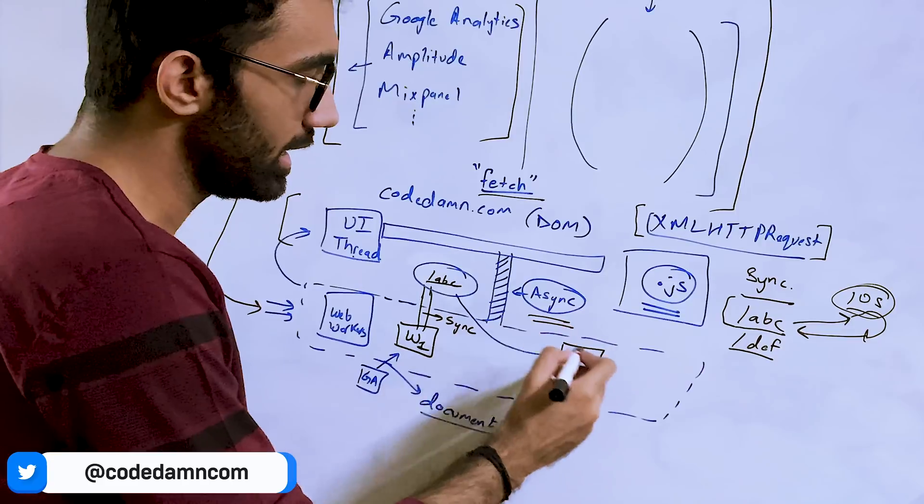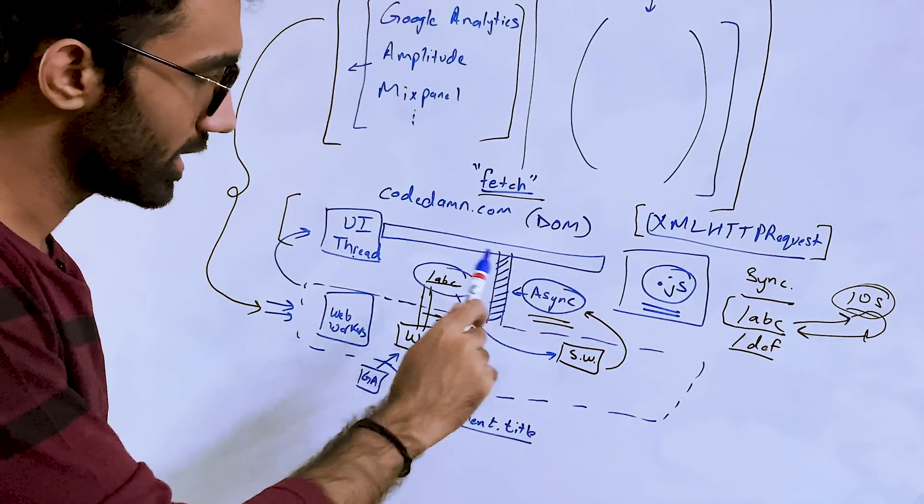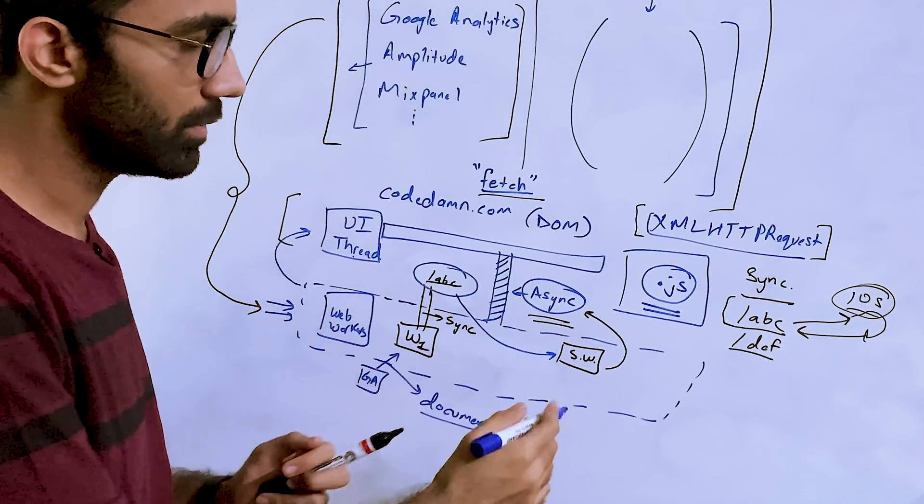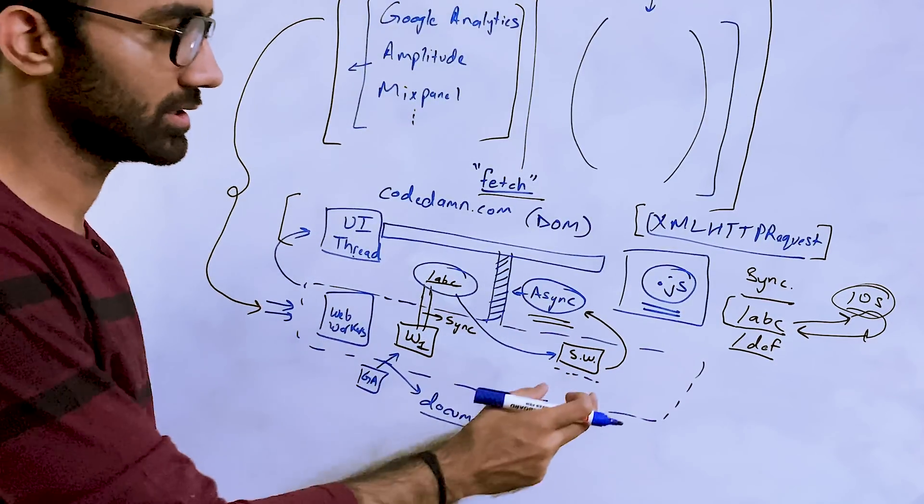And now it tries to communicate on this asynchronous bridge. Remember in this case what is happening is that this XML HTTP request which you made, you can think about this service worker as the front-end back-end. It's a back-end server kind of which is sitting on the front-end itself because it's intercepting the request.